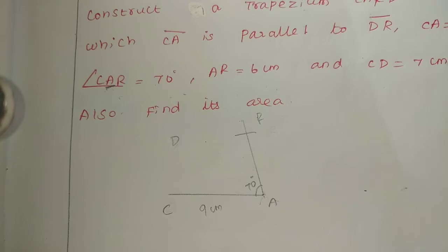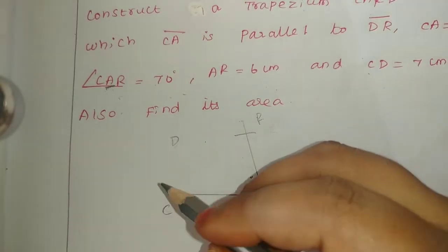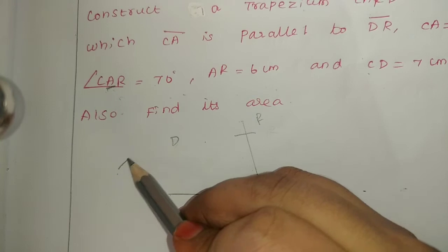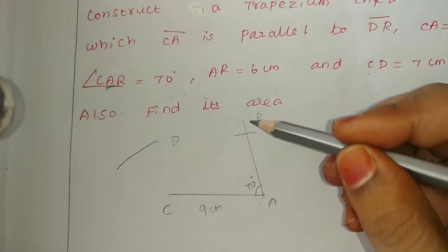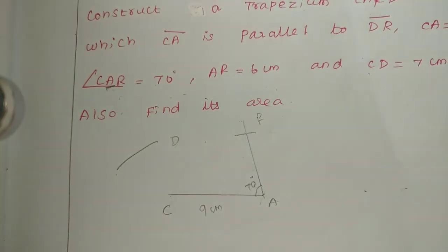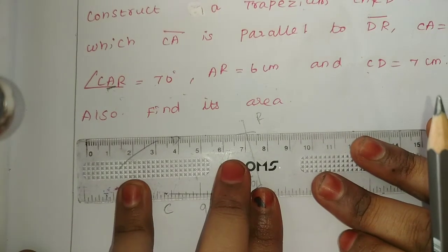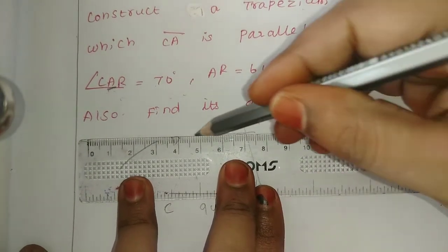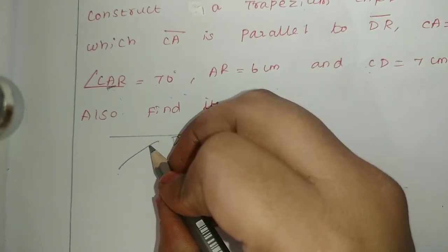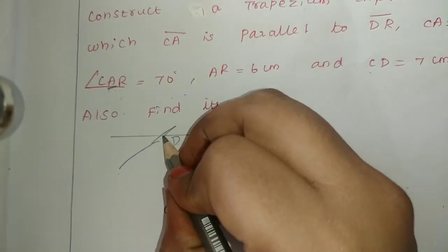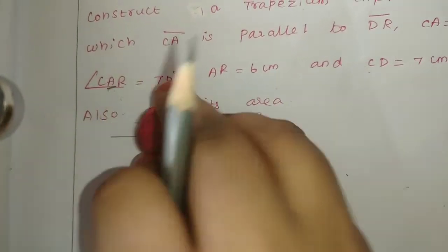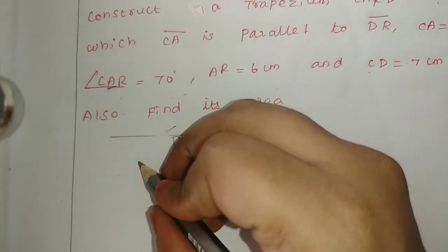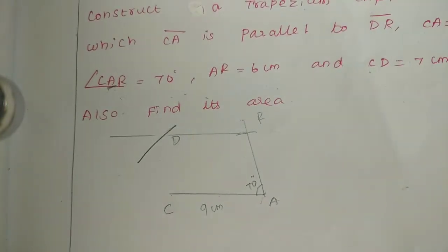Next, CD is 7 centimeter. This is very important. This is a single arc. This is a parallel line difference. The part is bigger than the arc.